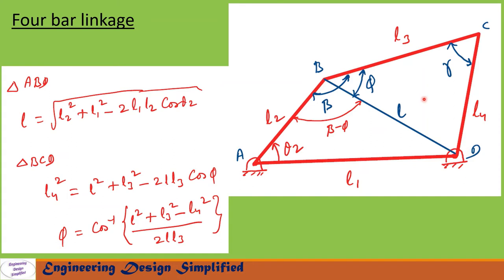From triangle BCD, with angle phi, let us apply the cosine rule to find angle phi. So: l4 squared equals l squared plus l3 squared minus 2·l·l3·cos(phi). From this equation, phi equals cos inverse of (l squared plus l3 squared minus l4 squared) divided by (2·l·l3). Using this equation we can find angle phi.